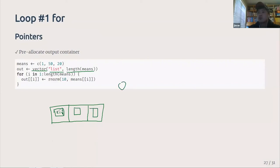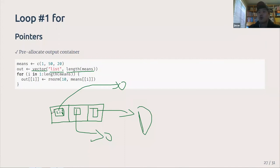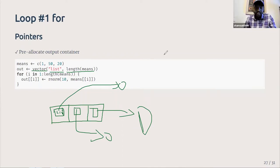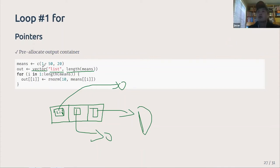You pre-define an empty list or vector of the appropriate type and length, and at each iteration your list points to some `rnorm` object. You reach the end of the means vector, length three, and you have your result. You don't have to expand the container one at a time every iteration — this is especially important when you don't know when it ends. This is one reason people say for loops in R are a bad idea, but pre-allocation solves that issue.